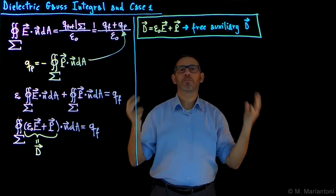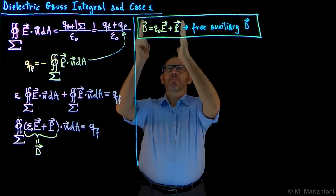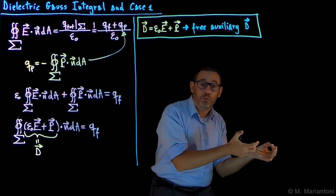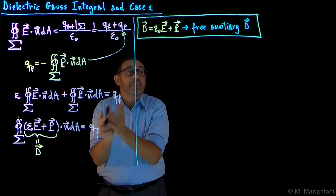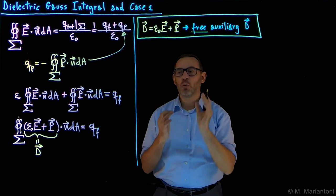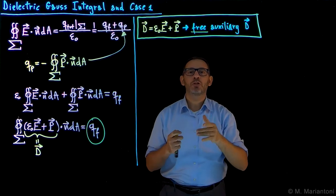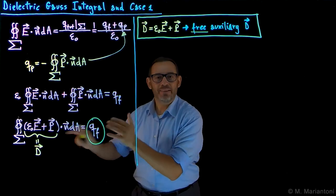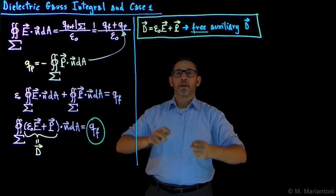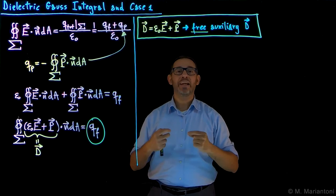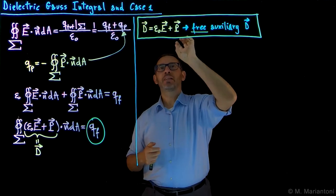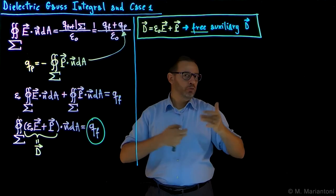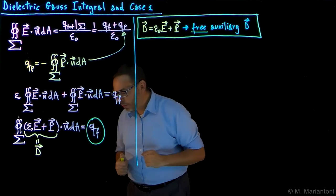E is always irrotational, at least in the static case, whereas D is not — so D is less fundamental and is just an auxiliary field. D is useful because it relies only on Qf: by using D we can solve problems in a much easier fashion than using E, which intrinsically accounts for all charges including polarization charges. With D we sweep that part under the rug, making problems much simpler to solve.